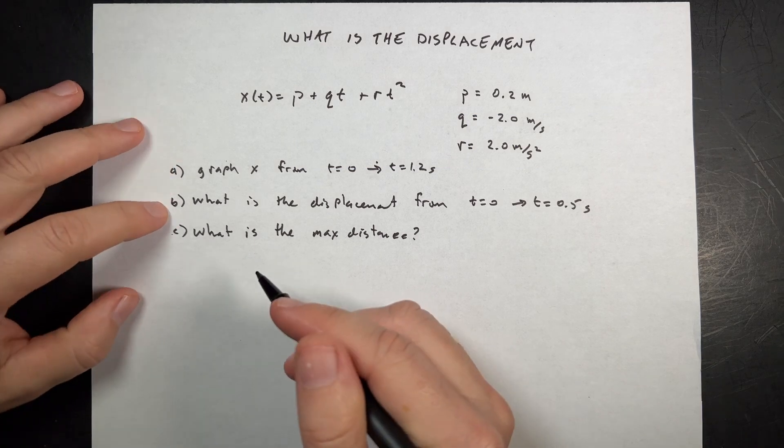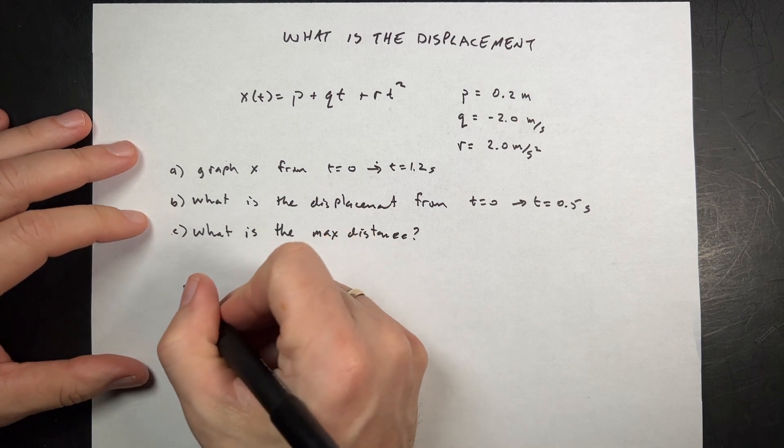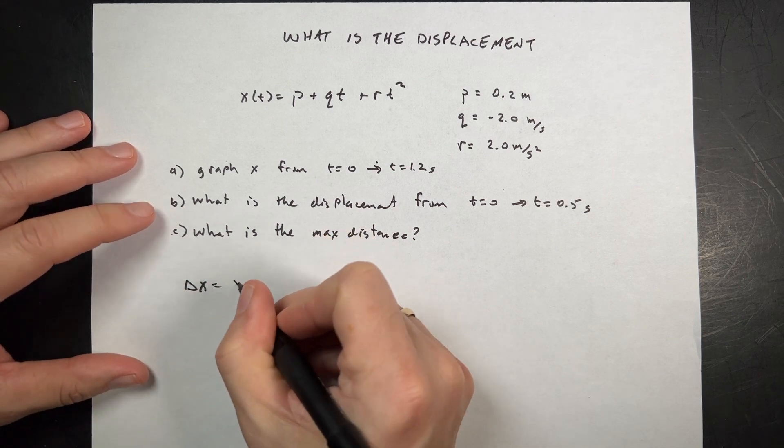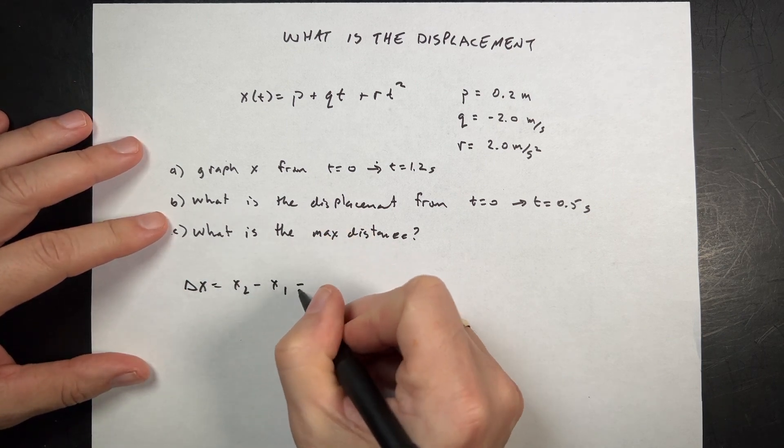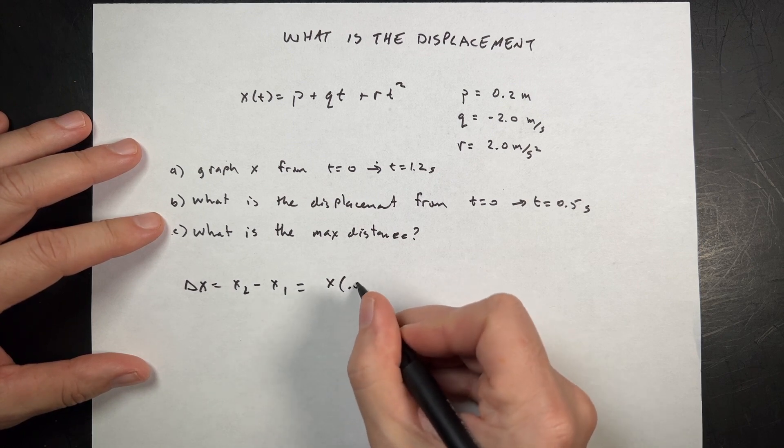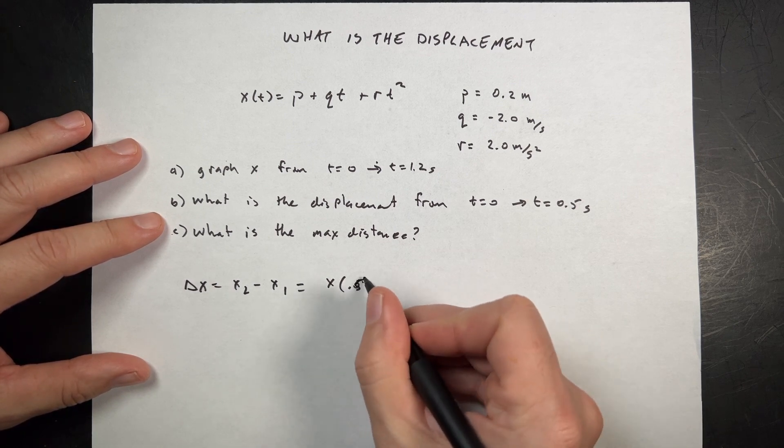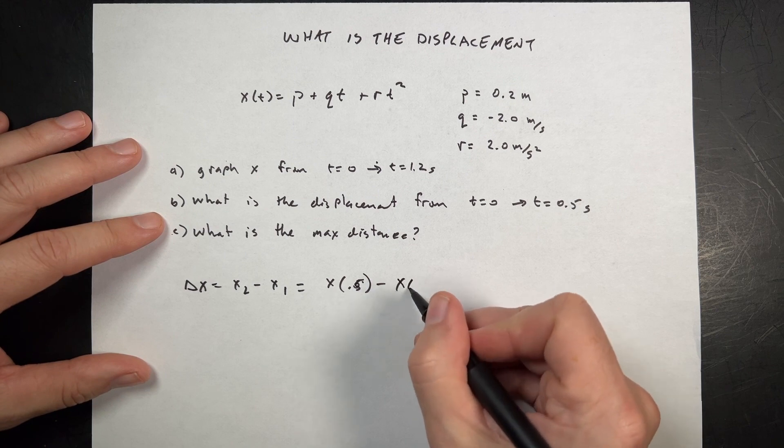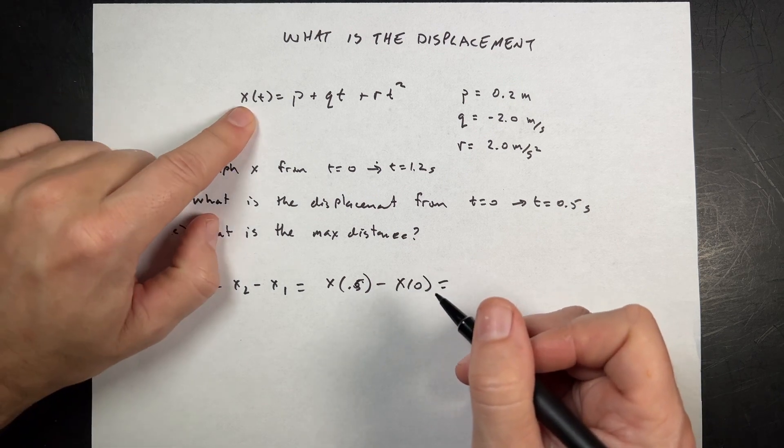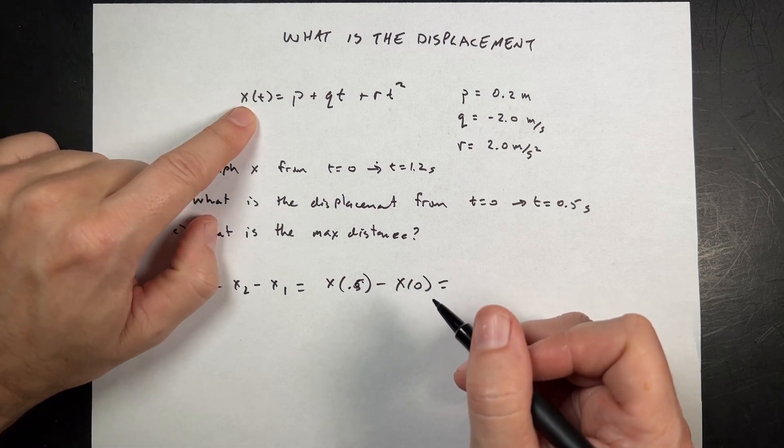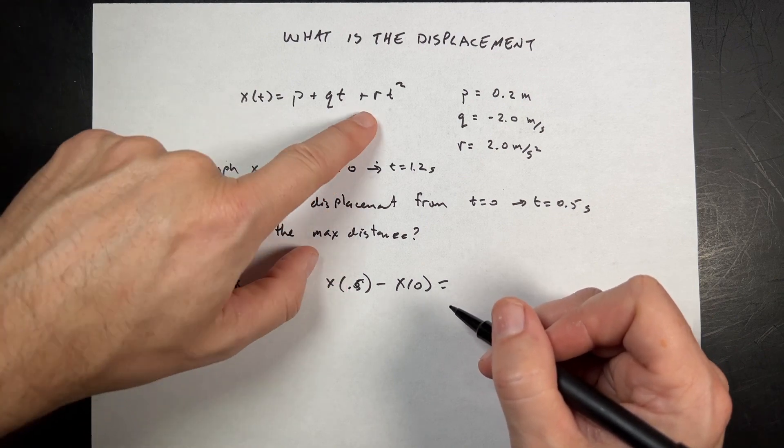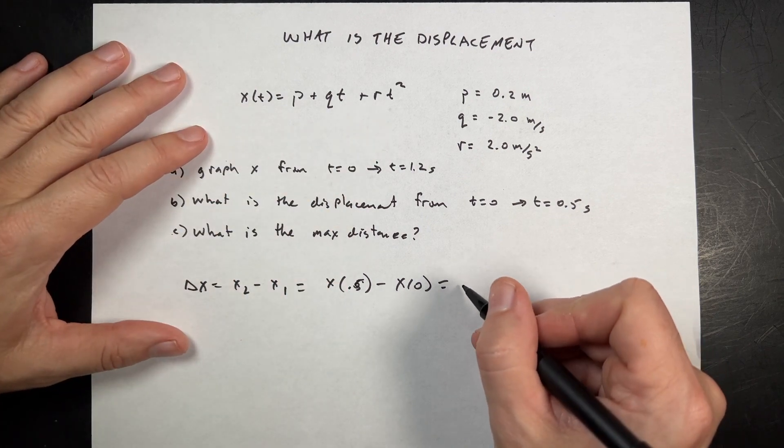Going back to the paper. Okay, so we got that. What is the displacement? So I'm going to call this delta X equals X2 minus X1, which is going to be X at time 0.5 minus X of 0. So now I can just put in my values for T equals 0.5 and T equals 0.